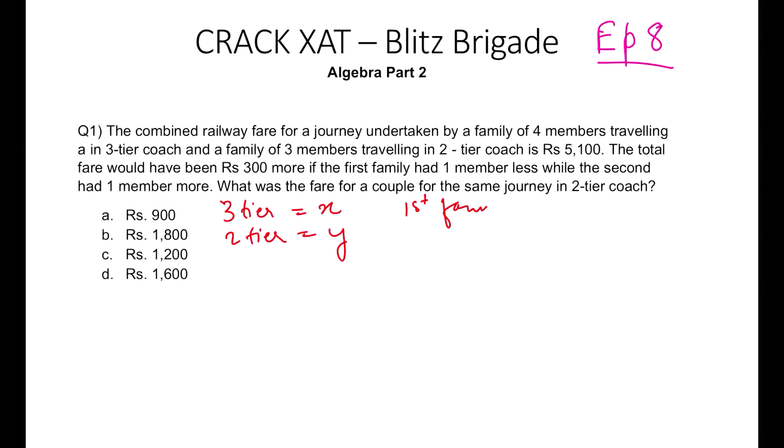For the first family which is traveling, there are four members traveling, so 4X. And the second family is having three members in the second-tier coach, so therefore it will be 3Y. Now the very first equation says that the total cost is 5100. So I have my first equation which is 4X plus 3Y equals 5100.